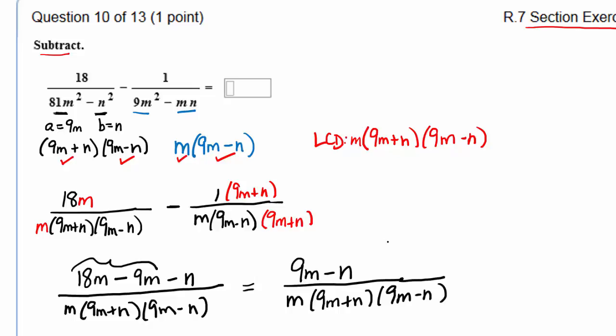And we should always look to see if we can reduce fractions. Can this one be reduced? Yes. What factor is in common to both the numerator and denominator? The 9m minus n. So we're going to divide those by each other. This is going to equal 1 over m times 9m plus n. Any questions about that one? I hope you found this video useful. If you did, please remember to like it.